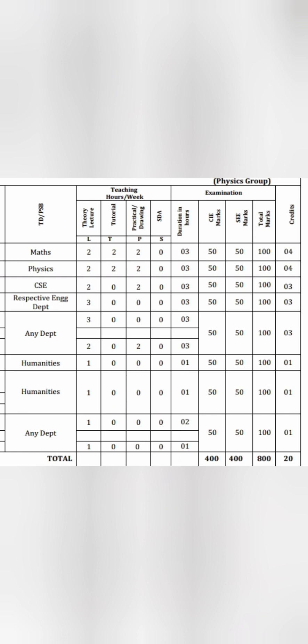The total credits you are going to earn in the first semester is 20 credits. Maths has 4 credits, Physics has 4 credits, Computer Science has 3 credits, others are 3 each, and Humanities subjects like English, Kannada have 1 credit each — totaling 20 credits in the first semester.